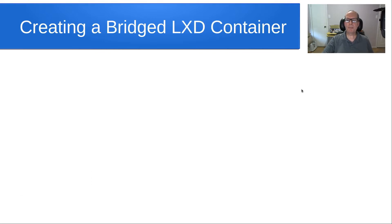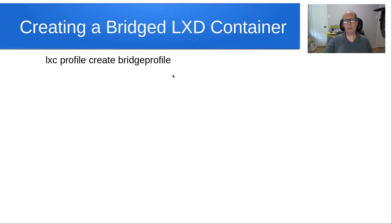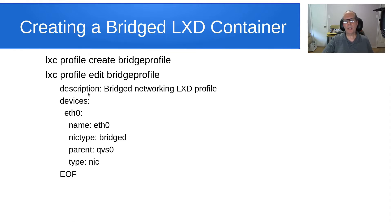To create a bridge LXD container, use the command 'lxc profile create' and name your profile, for example, bridge-profile. Then do 'lxc profile edit bridge-profile' and add the required configuration. The parent 'ens0' is the name of the Ethernet adapter on the host, the NIC type is set to bridged, and an end-of-file marker closes out the edit session.